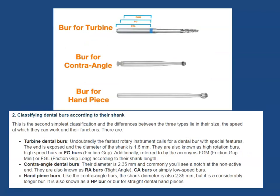The next classification is according to the shank. The shank can be smooth, held in place only by friction — this is called the friction grip, abbreviated FG. FGL stands for friction grip long, and FGM stands for friction grip mini. So we have friction grip mini (short), friction grip (regular), and friction grip long (extended).